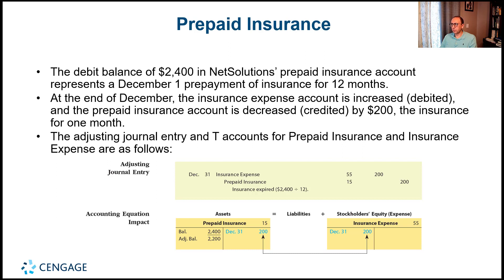For prepaid insurance: the $2,400 balance represents a December 1st prepayment for 12 months. That's $2,400 ÷ 12 = $200 per month. We record $200 of insurance expense each month. The adjusting entry on December 31st: debit insurance expense and credit prepaid insurance for $200. Insurance expense is debited; prepaid insurance — an asset — is credited as it decreases. On the accounting equation, prepaid insurance goes down by $200 and insurance expense goes up by $200.